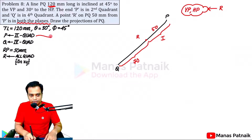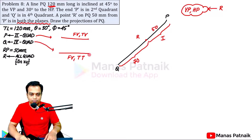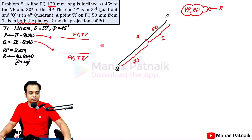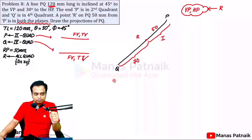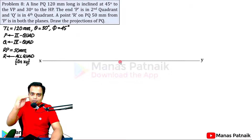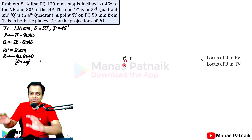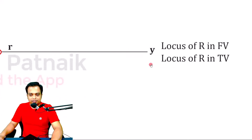One important thing to reiterate: when you talk about the second quadrant, the front view and top view are both above the reference line. When you talk about the fourth quadrant, the front view and top view are both below the reference line. Now let me draw the reference line. Point R is on the reference line, so its front view and top view coincide — I'll mark the locus of R in both front view and top view at that single point.